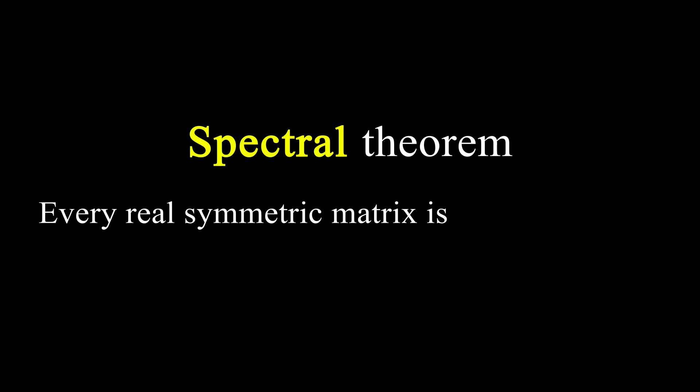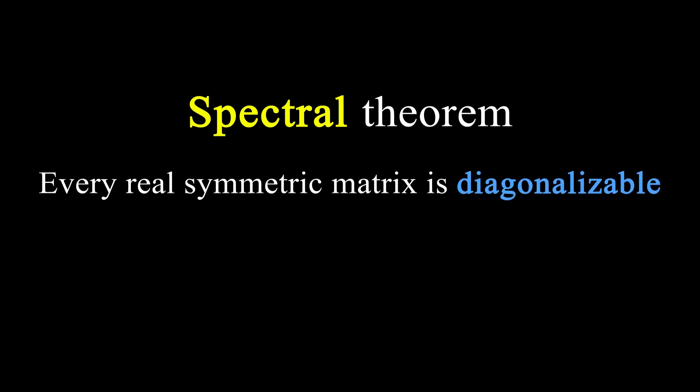Now, one last important fact about matrices is what we call the spectral theorem. This theorem tells us that every real symmetric matrix has eigenvectors, and especially that the matrix transforms our initial circle by stretching it along its eigenvectors.